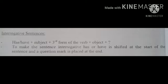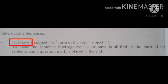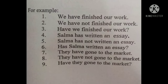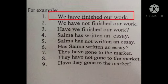Interrogative Sentences (سوالیہ جملے) Formula: Has/have + subject + third form of the verb + object + question mark. To make the sentence interrogative, has or have is shifted to the start of the sentence and a question mark is placed at the end. Interrogative Sentences بنانے کے لیے helping verb has یا have کو sentence سے پہلے write کرتے ہیں اور sentence کے end پر question mark لازمی put کرتے ہیں۔